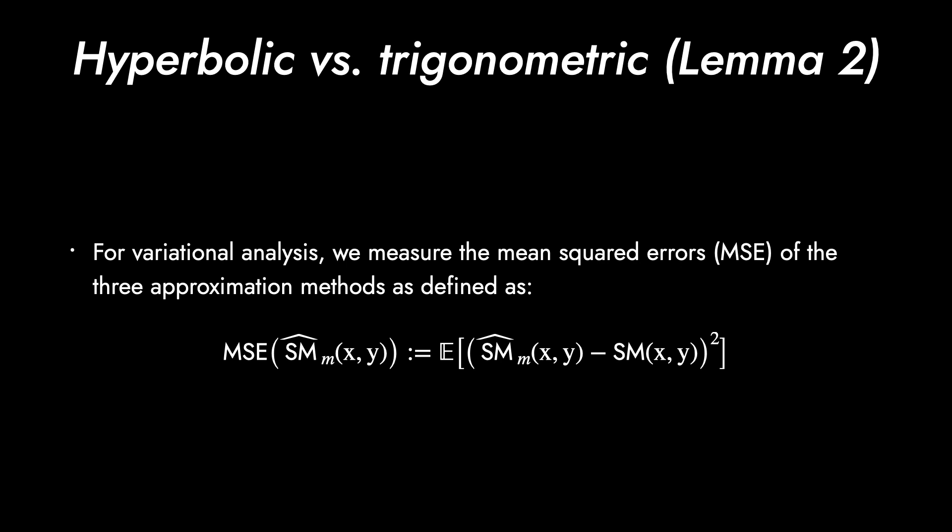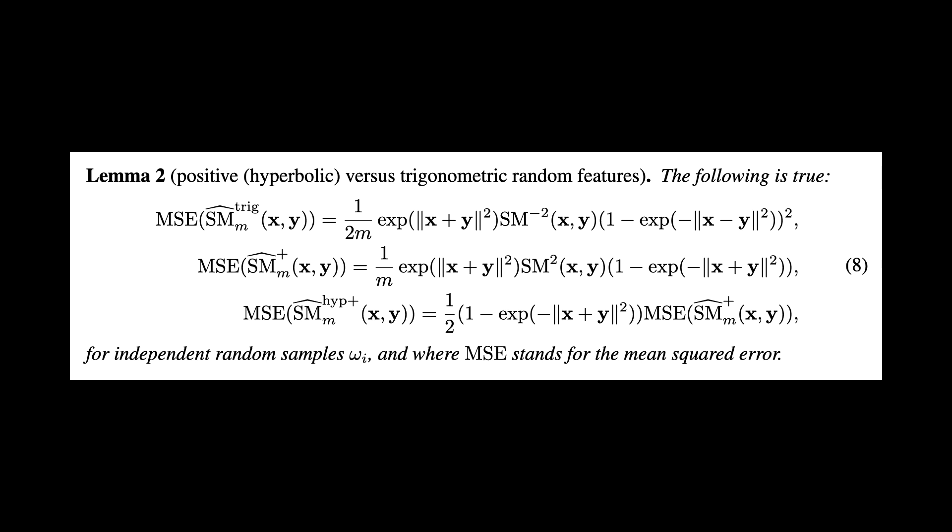In Lemma 2, we perform variational analysis with measuring the mean squared errors. It is the indicator that if we use just m samplings, how much it varies from the deterministic method, SM. Lemma 2 states that the MSE as a function of SM and other terms are related to exponential function, which is bounded to be strictly positive in real values. Before having some speculation on it, let's dive into the proof in appendix.